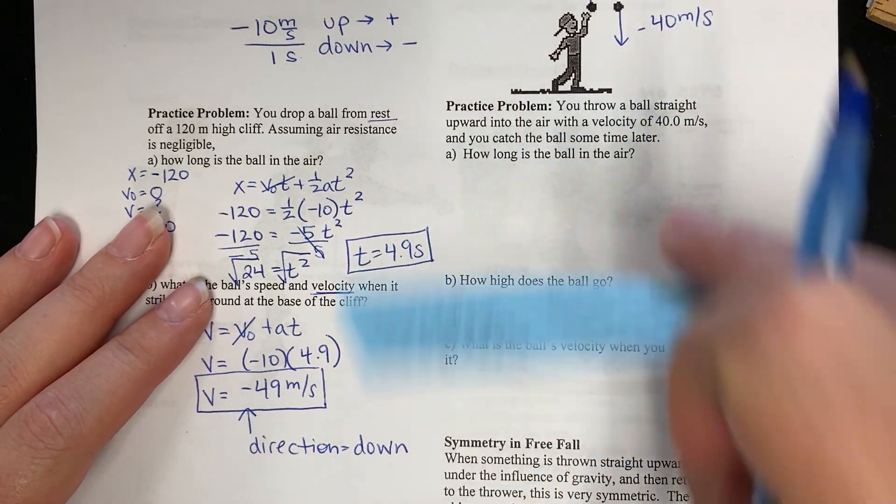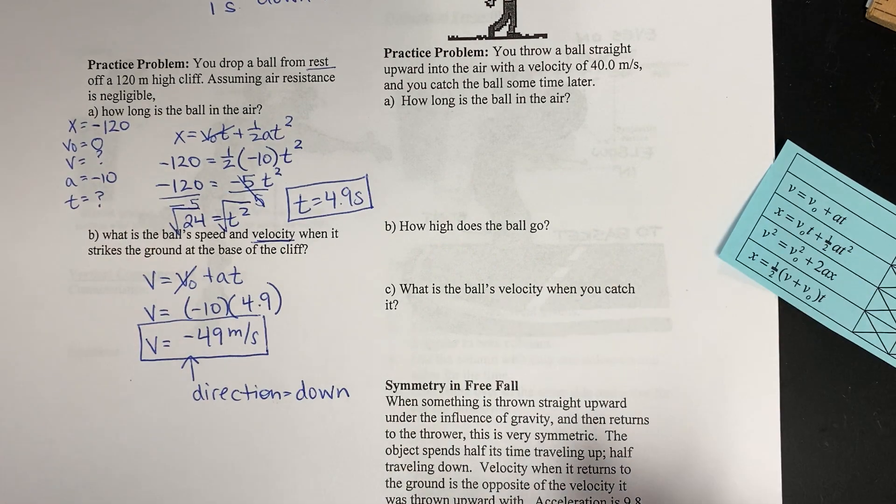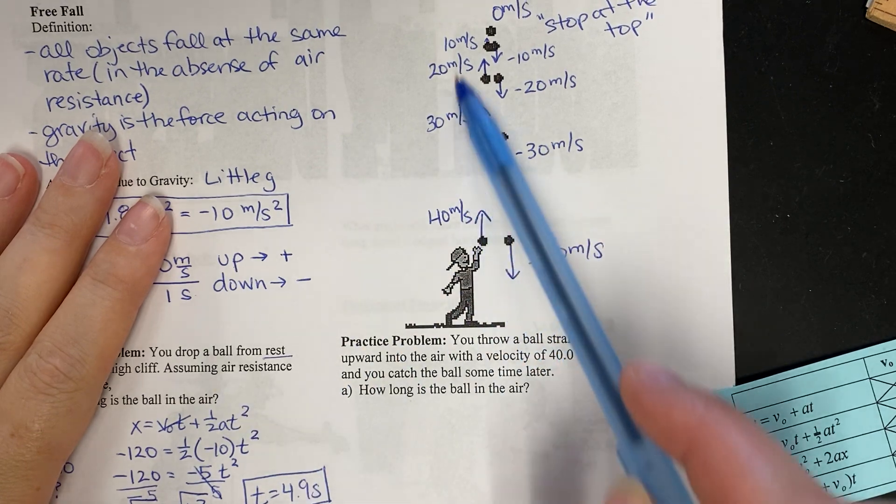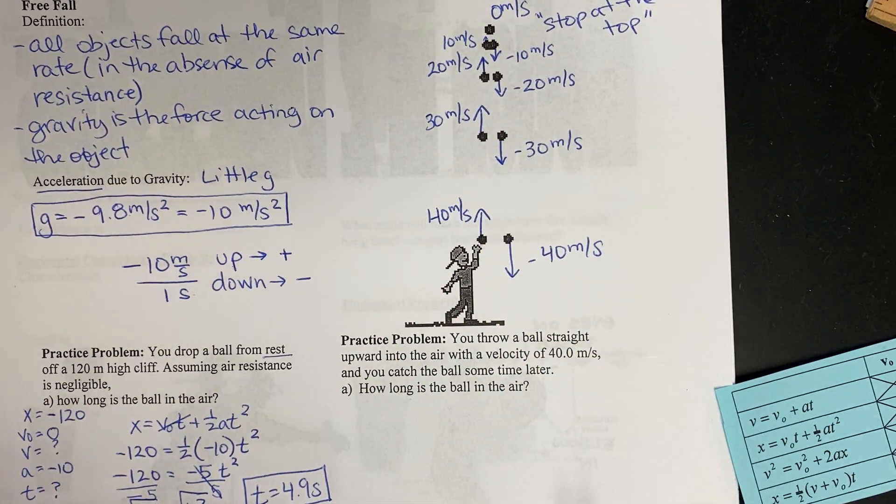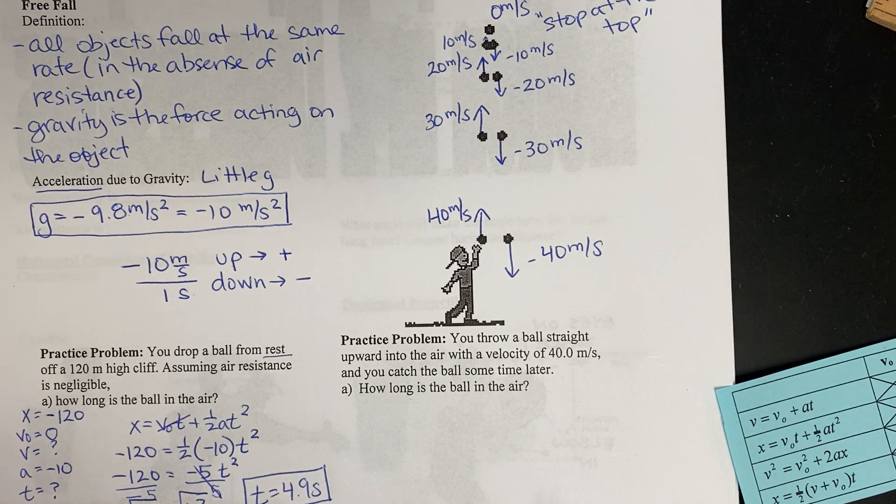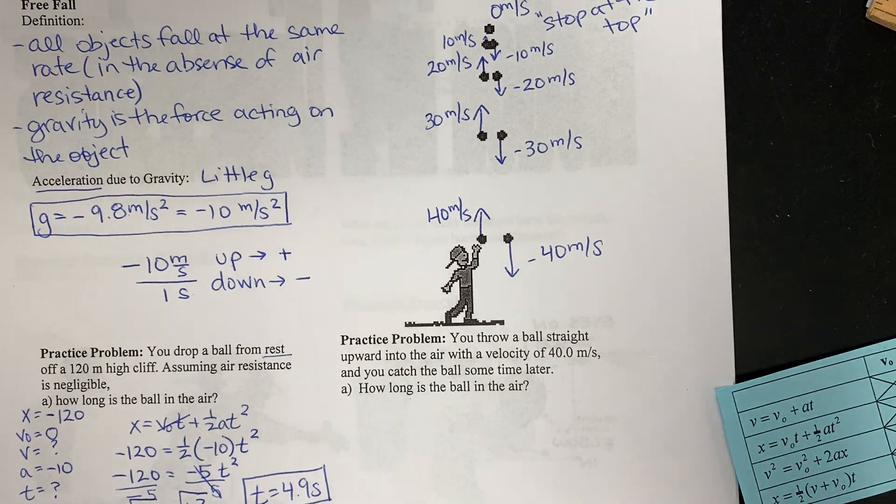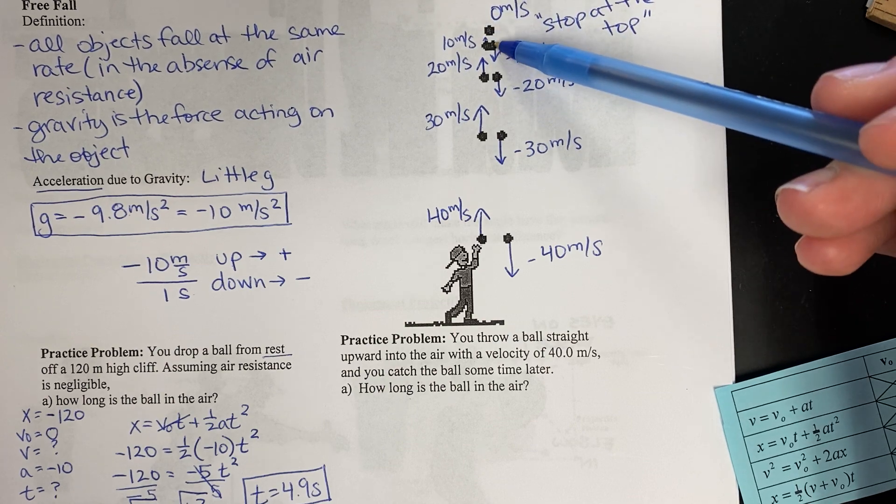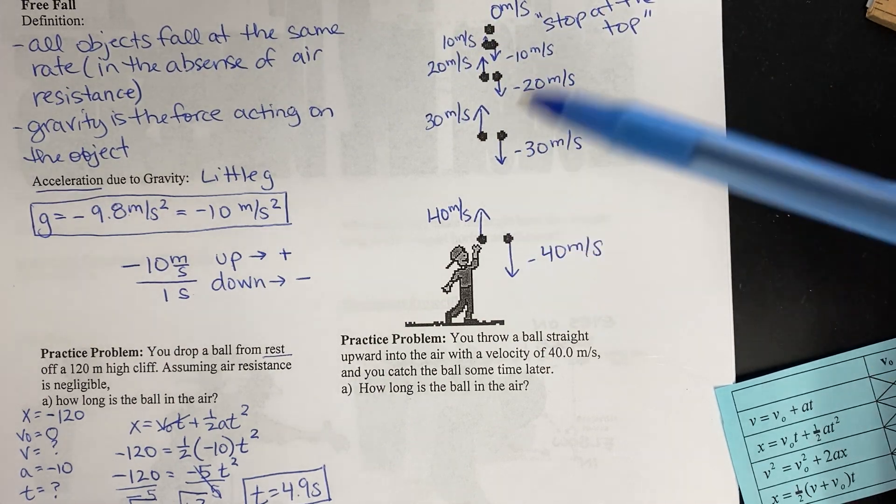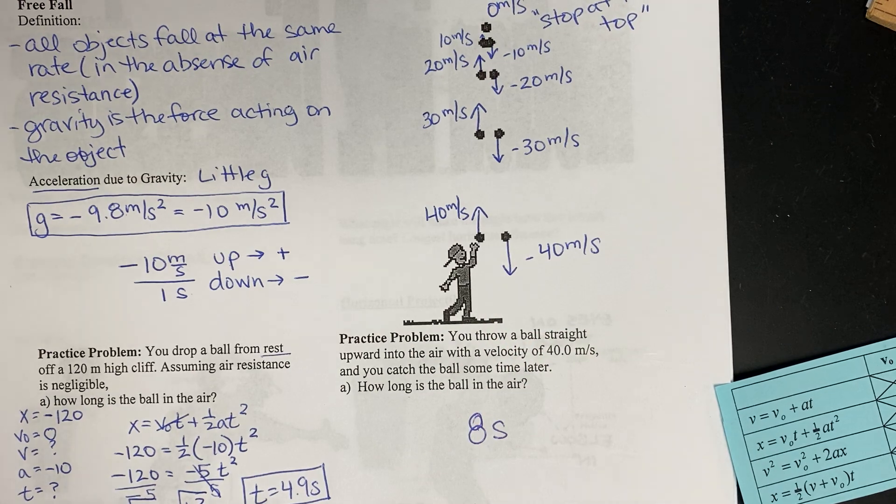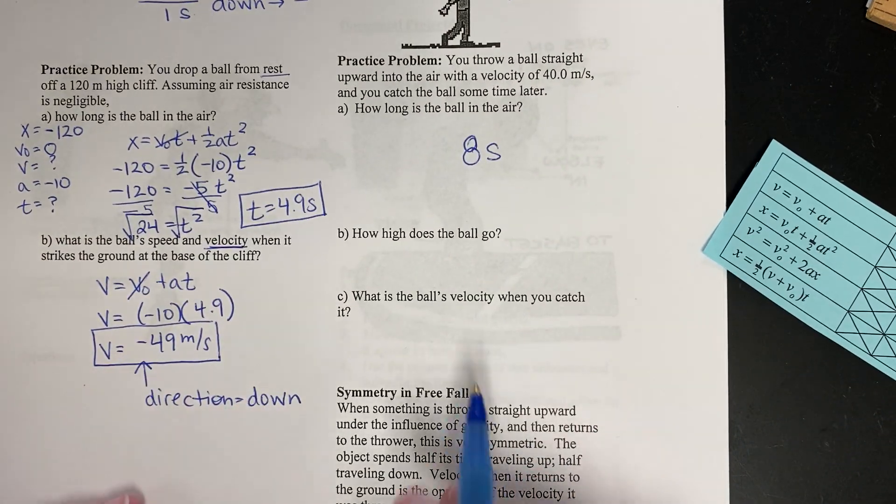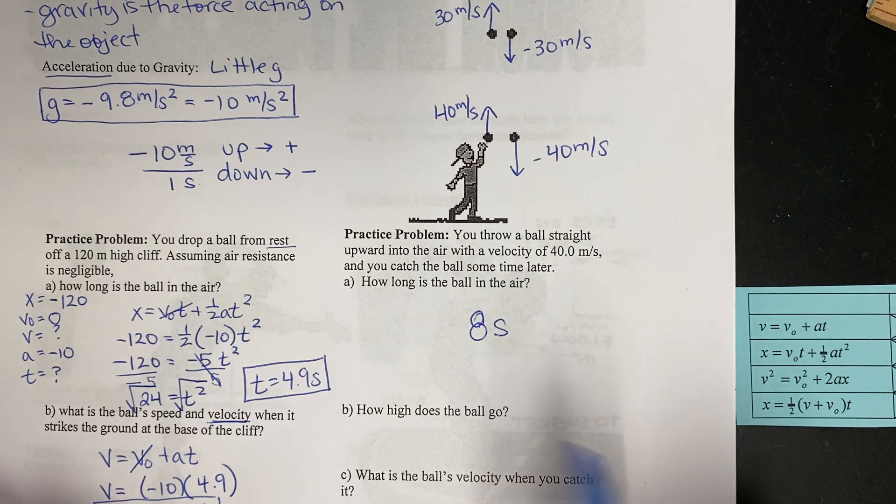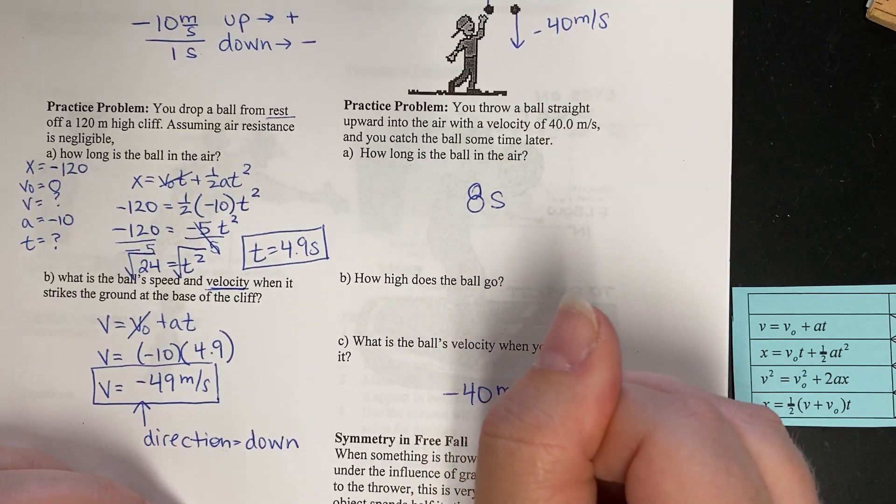Okay. One more practice problem here on page 27. You throw a ball straight upward in the air with a velocity of 40 meters per second. It's almost like, just like this picture. You catch it sometime later. Well, how long was the ball in the air? A couple of things. We can count. So if this is at time zero, this would be one, two, three, four, five, six, seven, eight seconds the ball is in the air. And part C is also real quick. What is the ball's velocity when you catch it? Well, we know it's negative 40 meters per second.